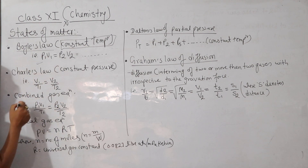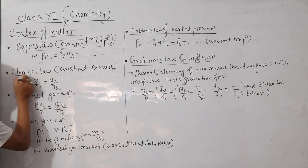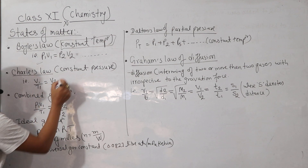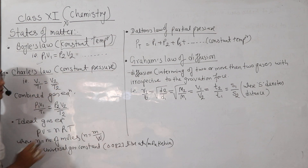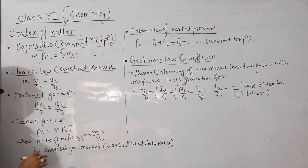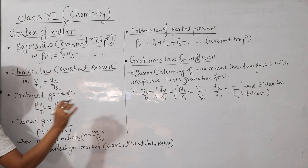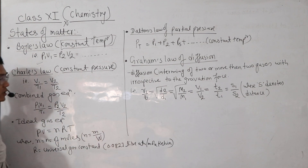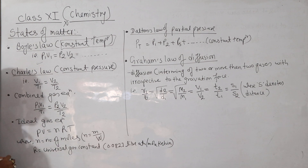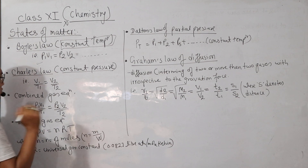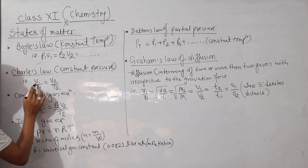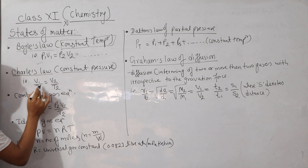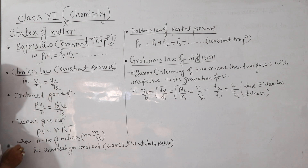The other law is Charles' law. What is our constant? Pressure is constant, so we have to get constant pressure. What is Charles' law? What is the derivative part? V1 by T1 is equal to V2 by T2.